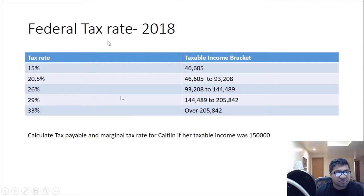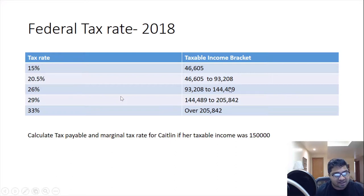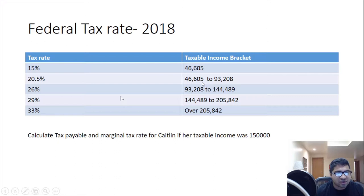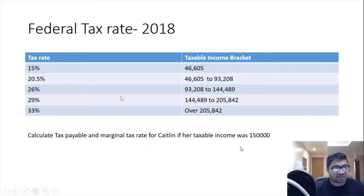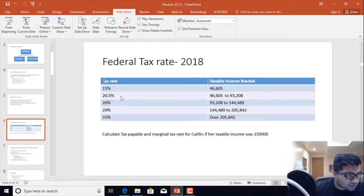Canada has a progressive tax structure. Using 2018 brackets as an example: the first $46,605 of income is taxed at 15%; from $46,605 to $93,208 at 20.5%; then 26%, 29%, and 33%. In the exam, they generally ask you to calculate tax payable and marginal tax rate. The brackets may change each year, but the concept remains the same.